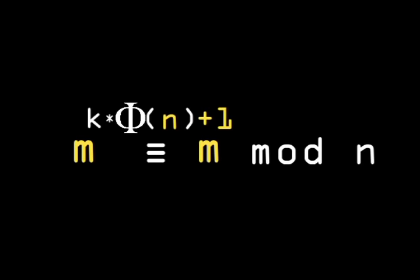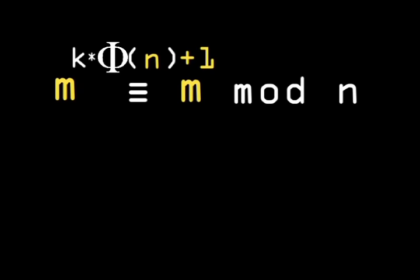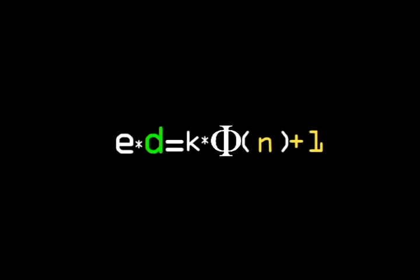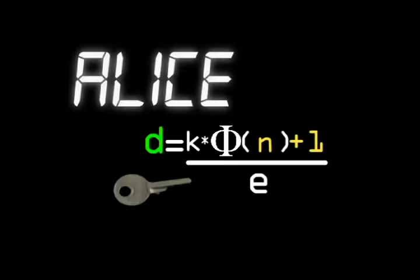This is the breakthrough. We now have an equation for finding e times d, which depends on phi n. Therefore, it's easy to calculate d only if the factorization of n is known. Meaning d should be Alice's private key. It's the trapdoor which will allow her to undo the effect of e.